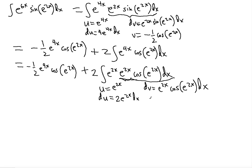For this dv, v is positive one half, because the antiderivative of cosine is sine — so it's a positive coefficient. Therefore v equals positive one half sine of e to the 2x. You can verify: the derivative of one half sine of e to the 2x gives one half cosine of e to the 2x times 2 e to the 2x, which equals exactly dv.